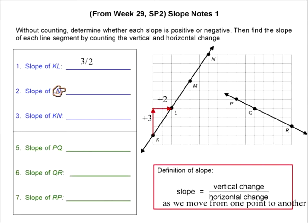And also, I want you to find the slope of each segment by counting the vertical and horizontal change. So here we go. Joe, you will do number two. Mark, you will do number three. Connie, you will do number five. Shelly, you will do number six. Pat, you will do number seven.